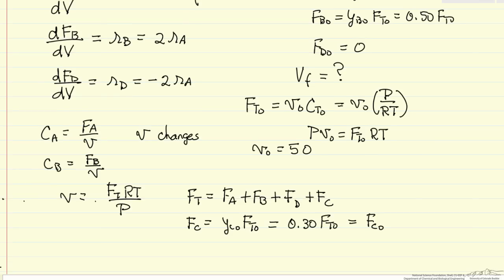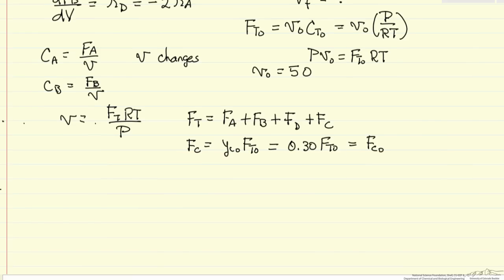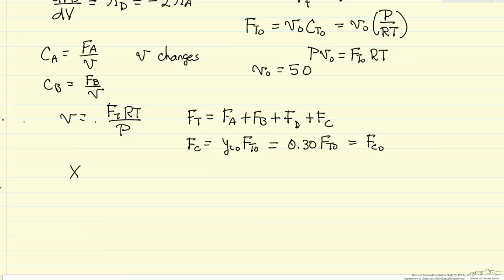The final calculation that we need to do is to calculate the conversion, because we are going to carry out this integration until the conversion is 50%. The molar flow rate of A at the inlet, minus the molar flow rate at any point in the reactor, divided by the molar flow rate at the inlet, this is our fractional conversion, and we want, at the exit, the final value to be 0.50.